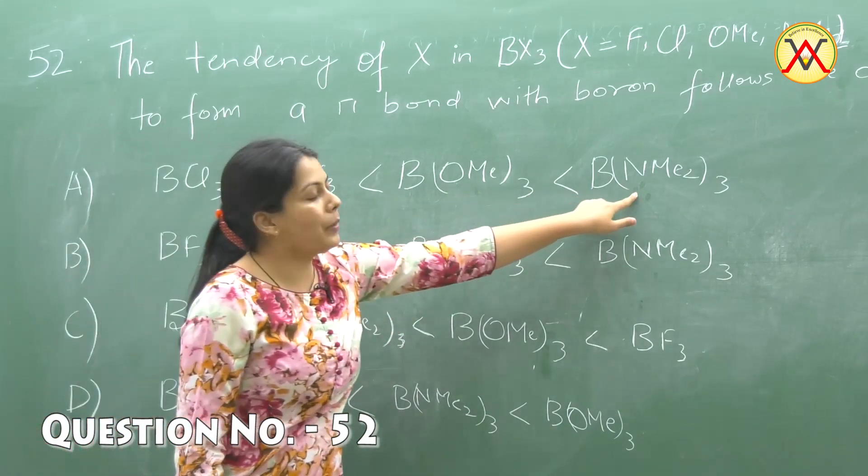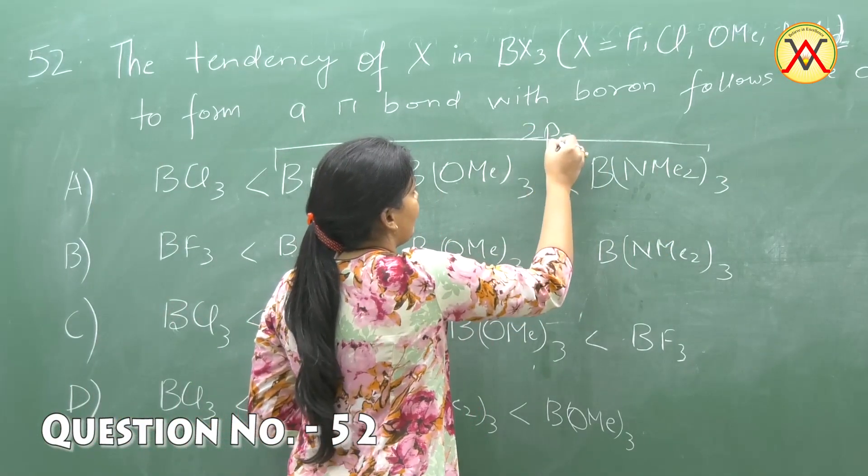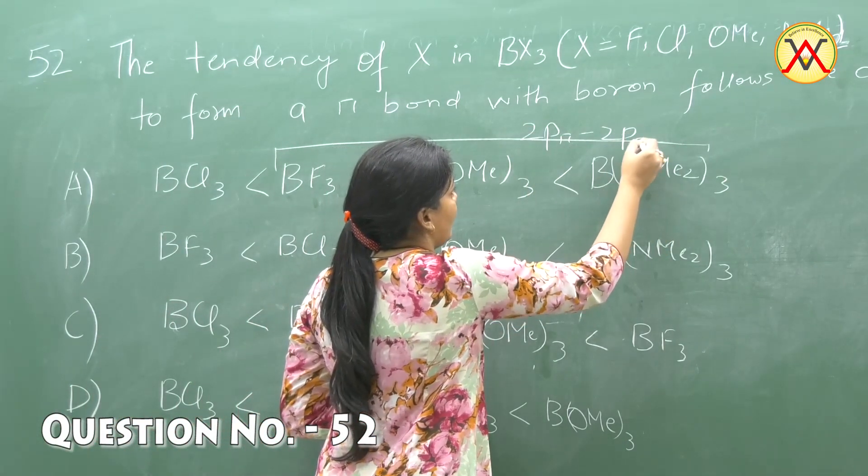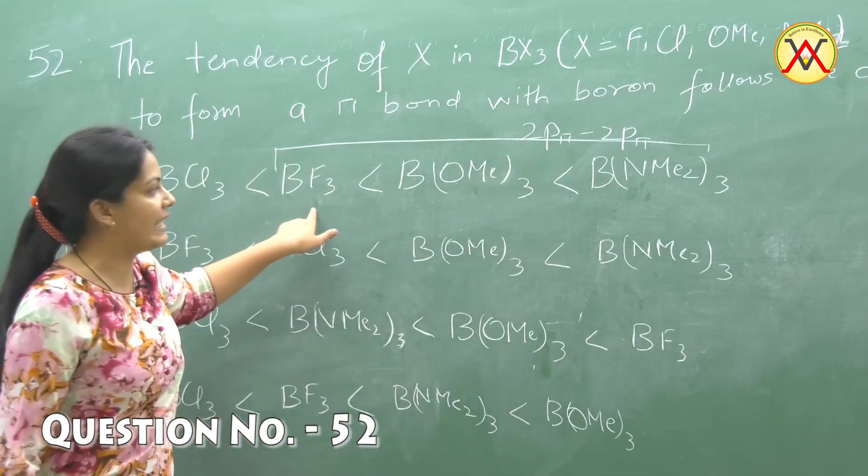They all form 2p pi, 2p pi bonds. The best donor is nitrogen because its electronegativity is the least in these two.